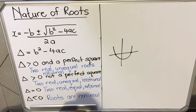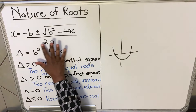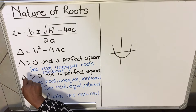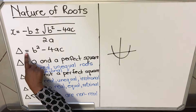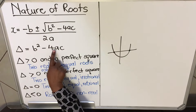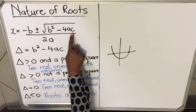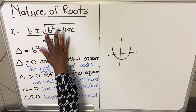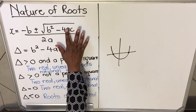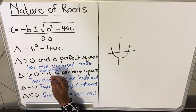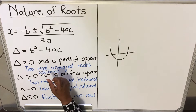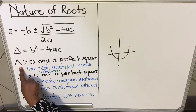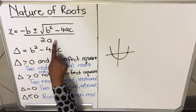We use the quadratic formula, but only a specific part of it. That part is called the discriminant, shown by the symbol delta: Δ = b² − 4ac. You can see that part is exactly what appears under the square root in the quadratic formula. Because it's under a square root, it helps us determine the nature of the roots of a given equation.